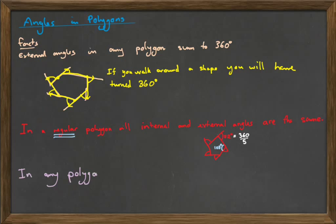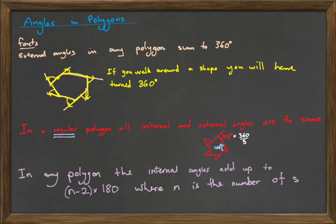Next. In any polygon, the internal angles add up to, they add up to this formula, n take away 2, times by 180, where n is the number of sides. So, for example, let's look at a pentagon. In a pentagon, we have five sides. So, if I put 5 into that formula above, I would get 5 minus 2, times by 180. This would be 3, times by 180, or 540.